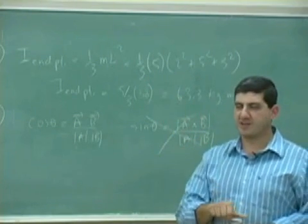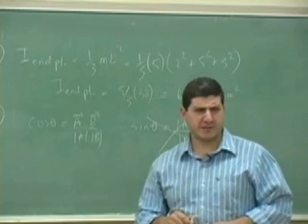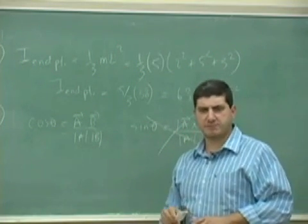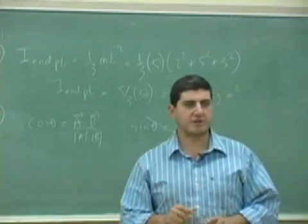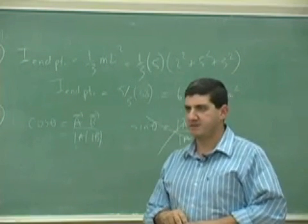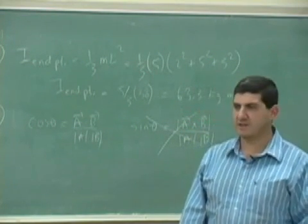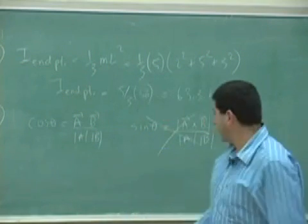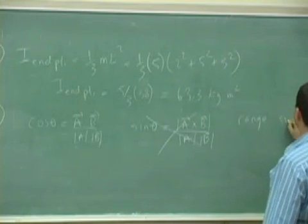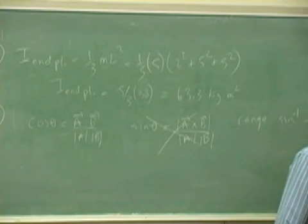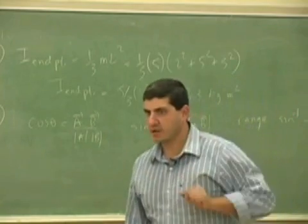Anyone know why? Anyone gone up to Calc 3 yet? Or done a lot of that stuff? Actually, you don't need to be in Calc 3 to know that. How about anyone done trig? Anyone know about inverse cosine versus inverse sine function? The range of inverse cosine versus the range of inverse sine. What's the range of the inverse sine function? The range of the inverse sine function is minus pi over 2 to pi over 2. So if the angle between two vectors is greater than pi over 2, we'll be in trouble.